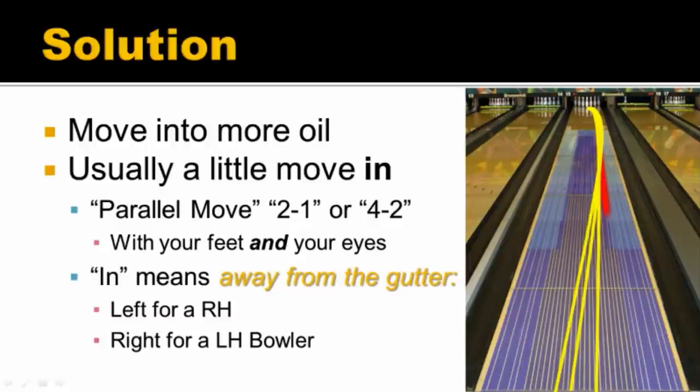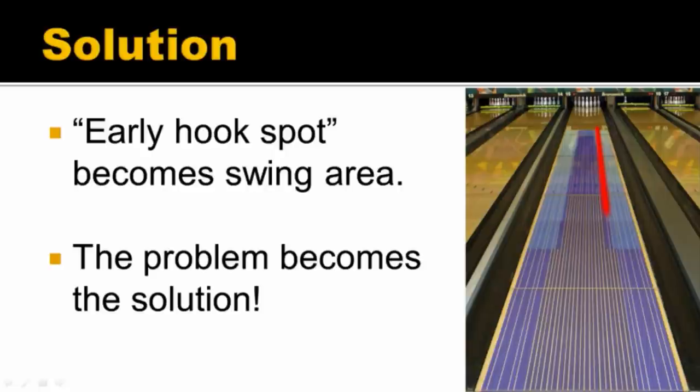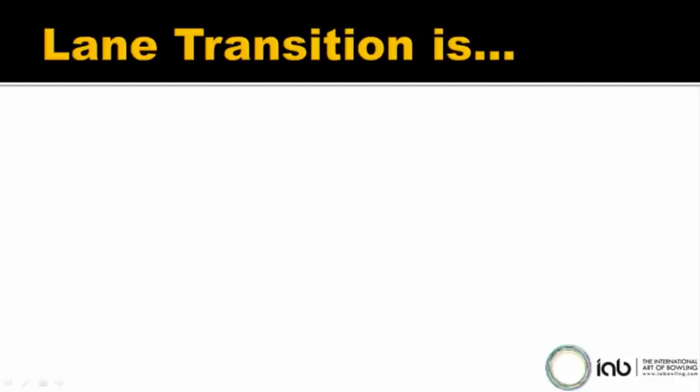And when I say in, I mean away from the gutter, towards the centre of the lane. So for a right-hander, you're moving left; for a left-hander, you're moving right. And when we make this move, that early hook spot that was a problem becomes some swing area — the ball starts to bounce back off it. Again, with the right move, problems become solutions.